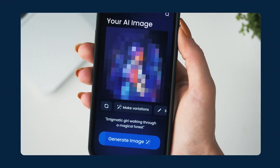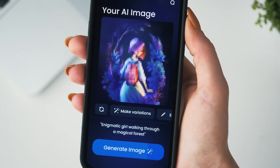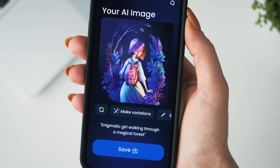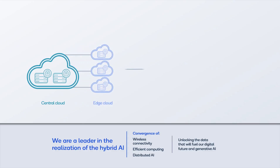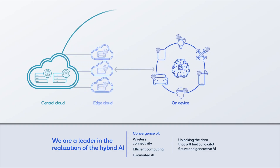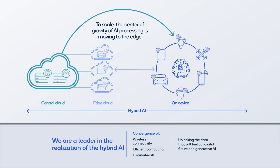As generative AI adoption grows at record-setting speeds, AI processing must be distributed between the cloud and devices for AI to scale and reach its full potential. On-device AI provides benefits in terms of cost, energy, performance, privacy, and personalization at a global scale.